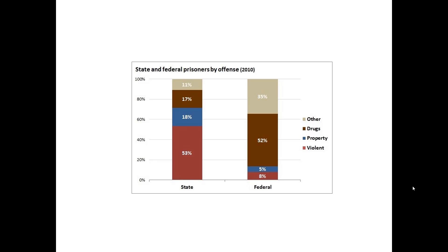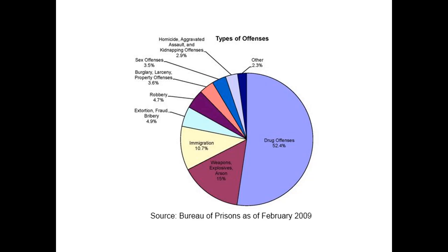Looking at federal and state incarceration, most people locked up federally are there for drugs. The other big category — about 35% — would be immigration violations primarily, with very few violent offenders. The states, on the other hand, tend to lock up people for violence, some for property, some for drugs. The Bureau of Prisons shows drugs at 52%, along with immigration violations, extortion, and bribery.